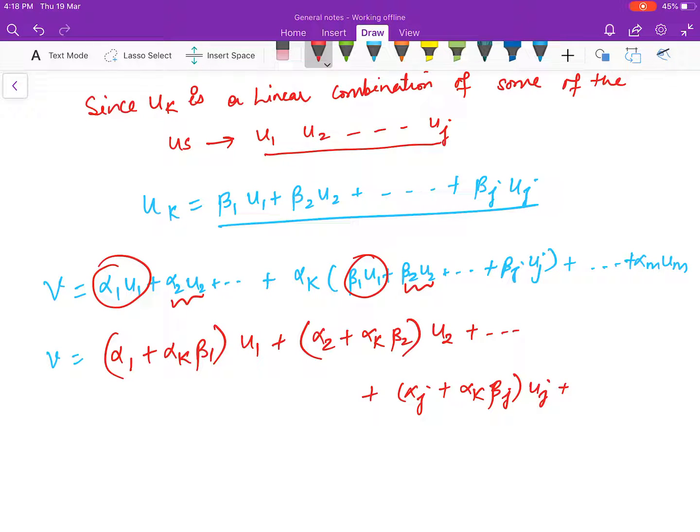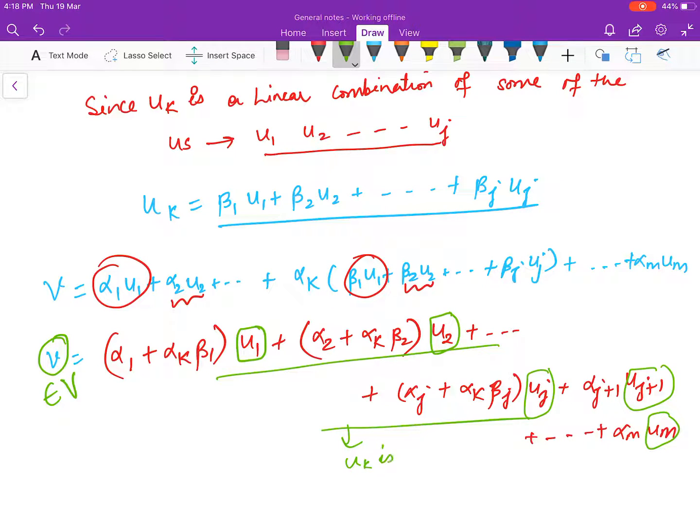And after that you have alpha_{j+1} u_{j+1} and so on alpha_m um. So it means that every element v in V can be written as linear combination of u1, u2, ..., uj, uj+1, ..., and you know that in this combination uk is missing because in place of uk we have put this value.